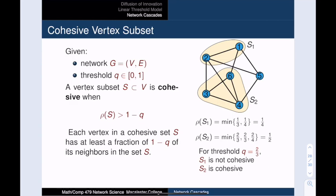We can now define a cohesive set. A set of vertices S is cohesive for threshold value Q when the density of S is greater than 1 minus Q. We will see that when we have a set S that is cohesive for Q, innovation cannot spread into S unless one or more vertices in S have already adopted the innovation. For example, let's suppose that we set the innovation threshold for this network to be two thirds. In this case, the set S1 is not cohesive. This is because one fourth is less than 1 minus two thirds, which is one third. On the other hand, the set S2 is cohesive because one half is strictly bigger than one third. In other words, an innovation that starts outside of S2 cannot possibly spread into S2.